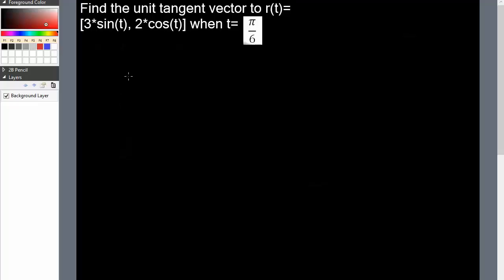Okay, so for this question we want to find the unit tangent vector to r(t) when r(t) is equal to this when we have t is pi over 6. So the first thing we need to do is get the derivative of r(t).